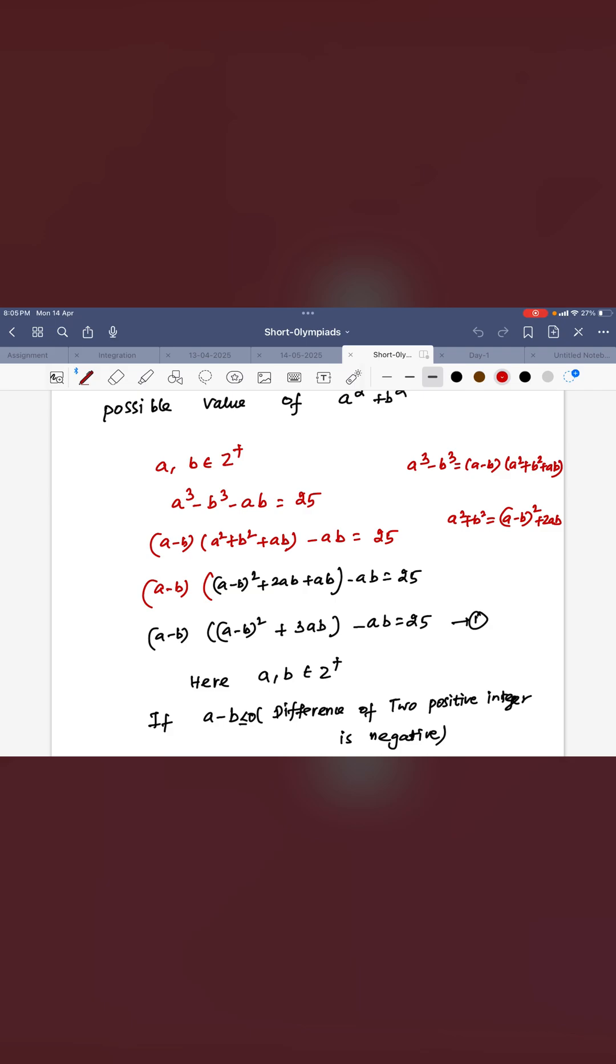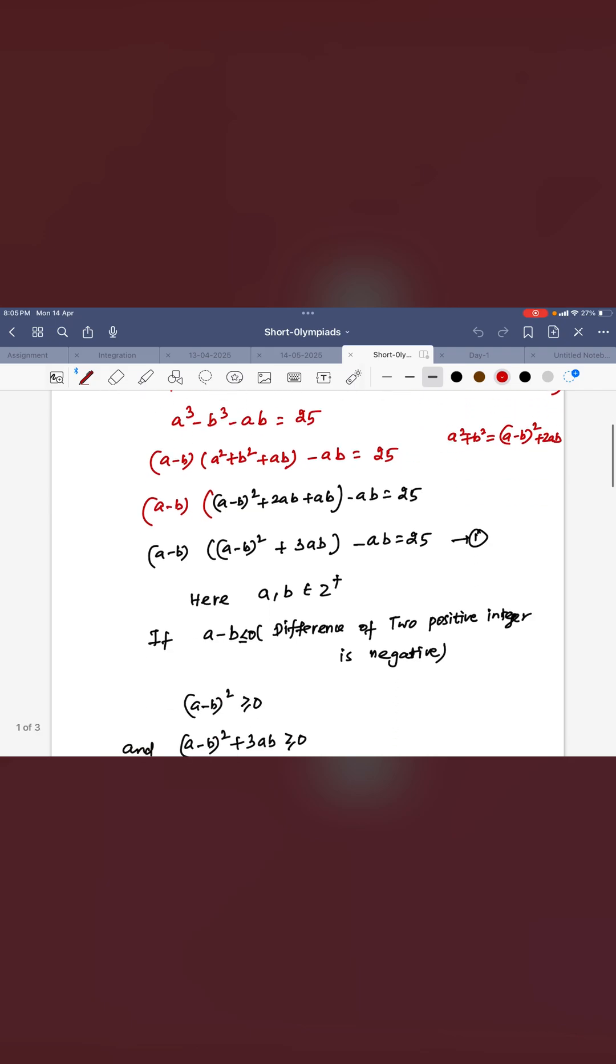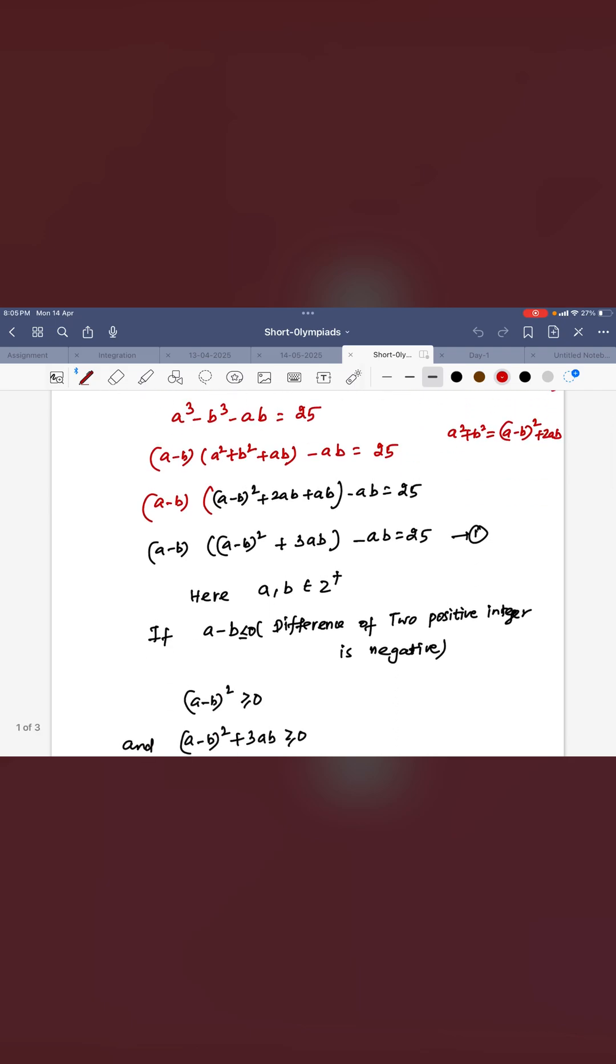Now you know that A² + B² = (A - B)² + 2AB. Just substitute it here, you can see that in the screen. (A - B) into some expression minus AB equals 25.